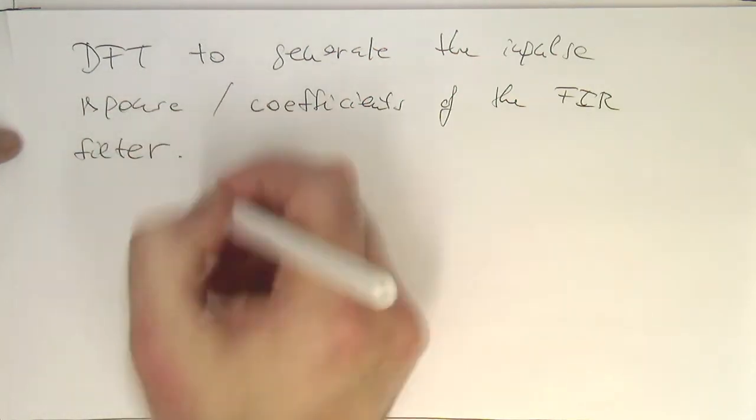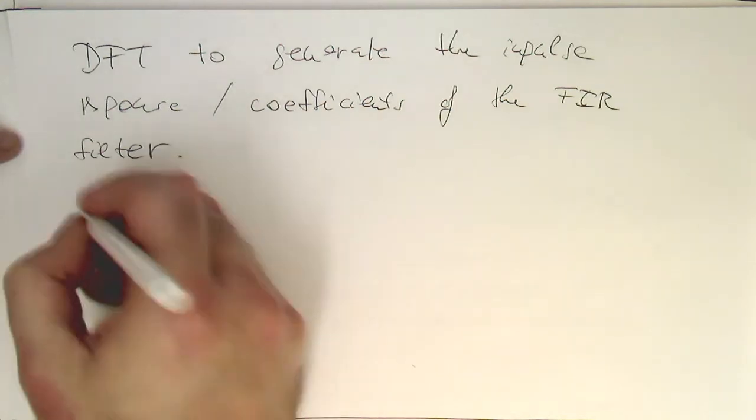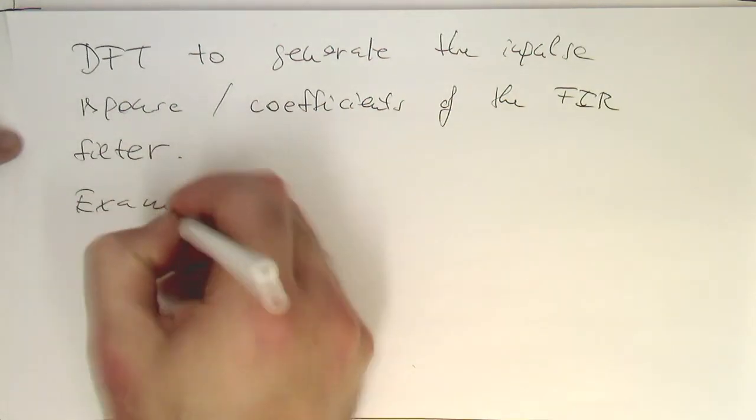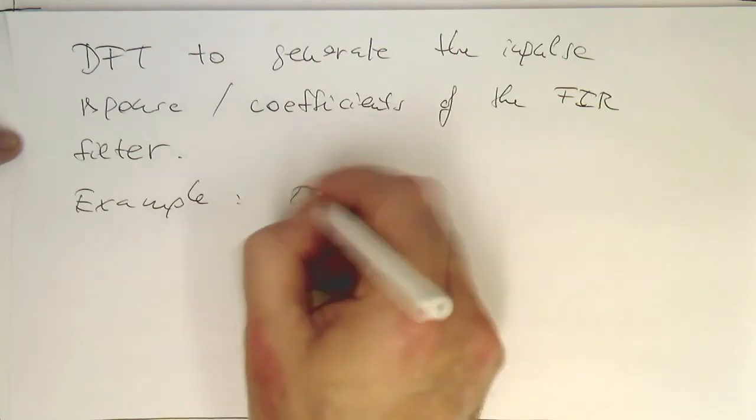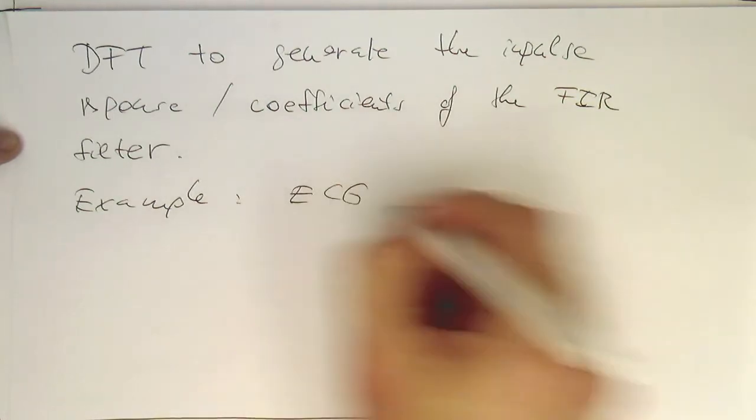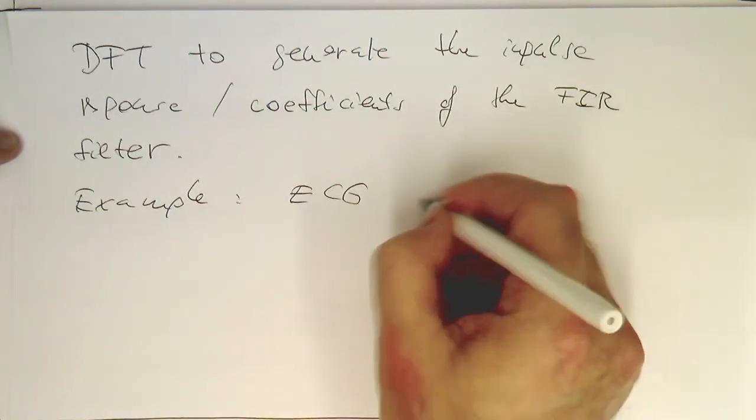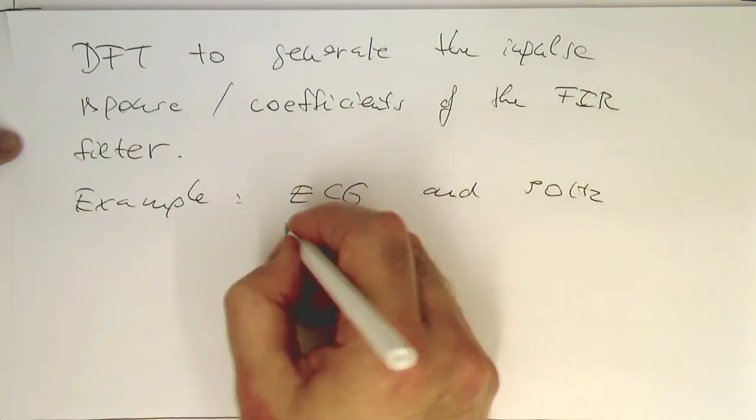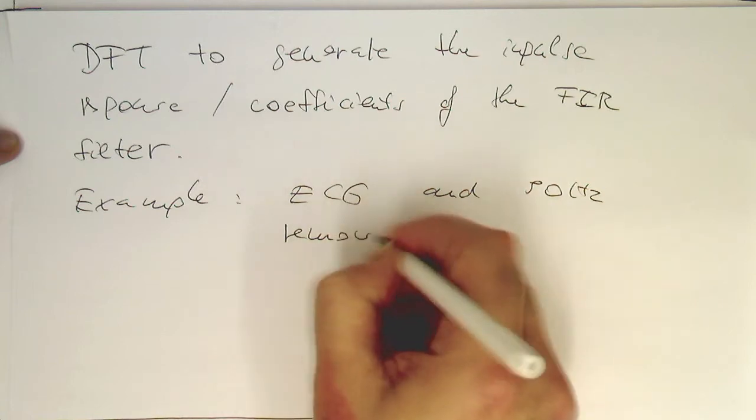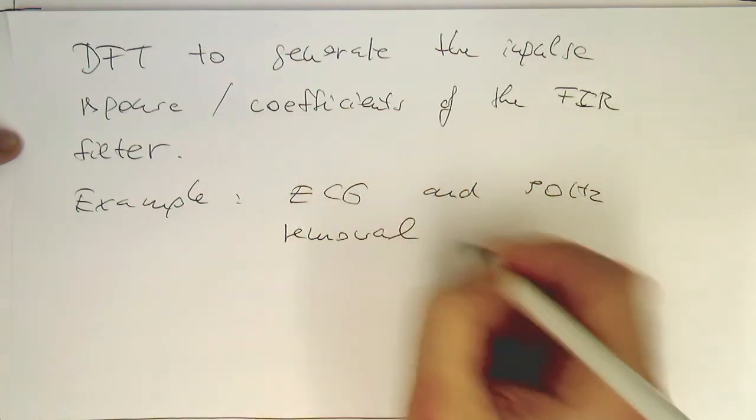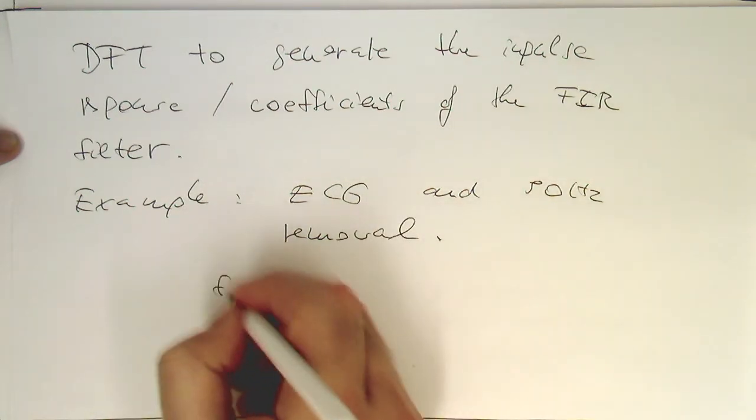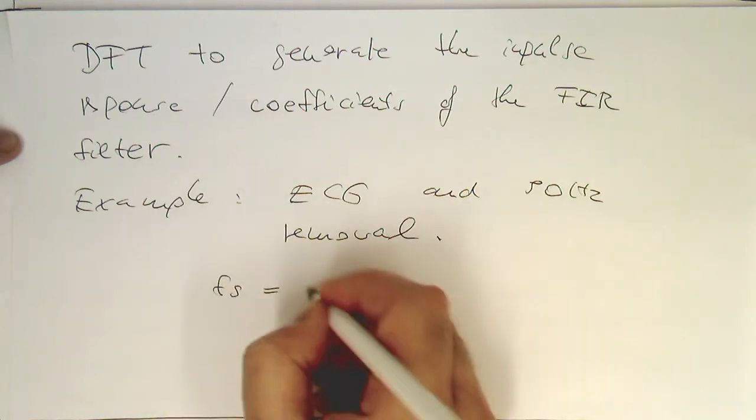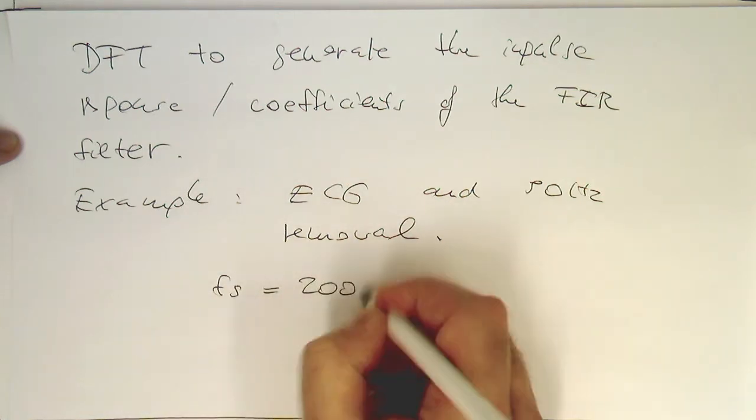And as in the previous example, we use here our ECG again. ECG and 50 Hz removal. So again, we're using an ECG with FS 200 Hz.